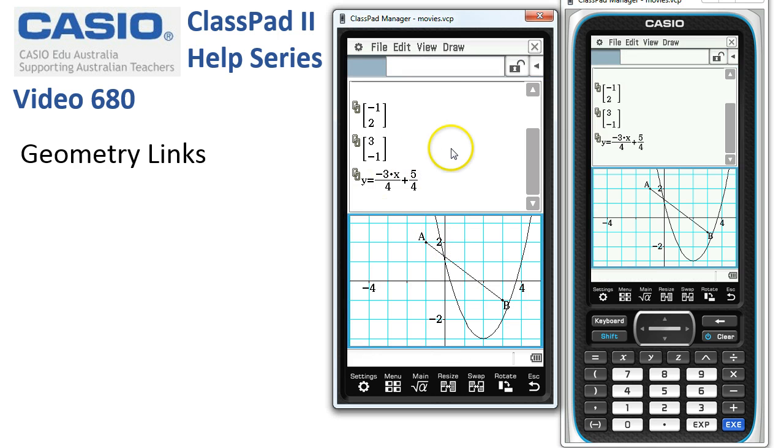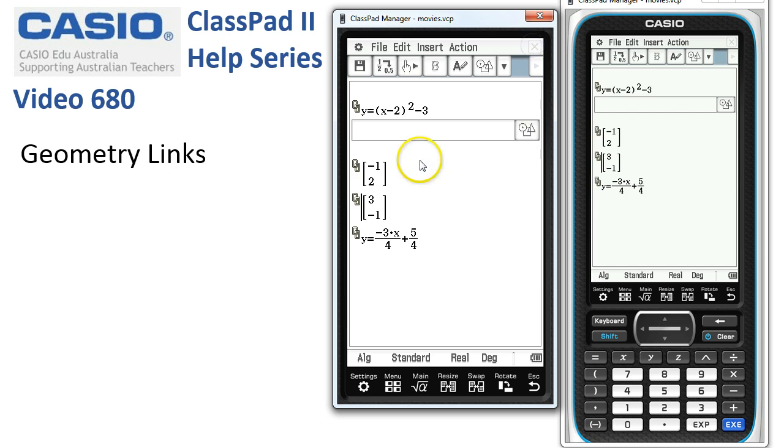We actually don't even need the geometry window open downstairs for this to work. So let's try what happens if we have a point at negative 2, 2 and 3, negative 1. When I tap execute, the equation of the line is automatically updated.